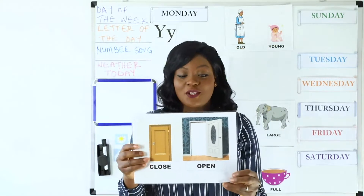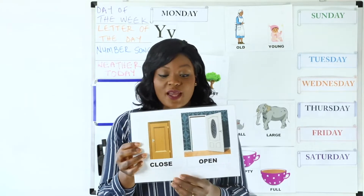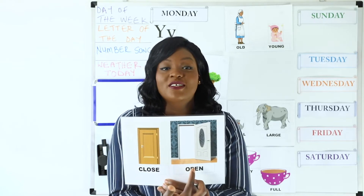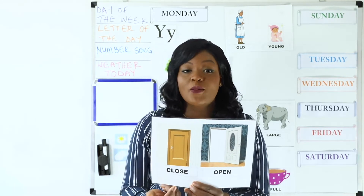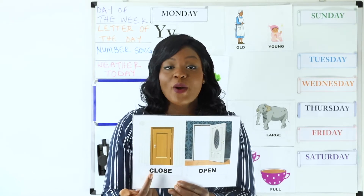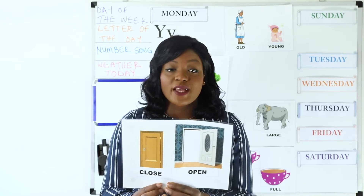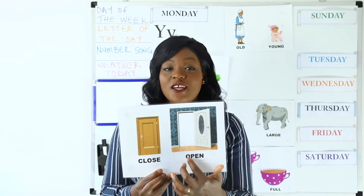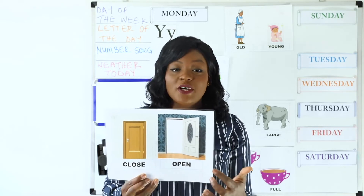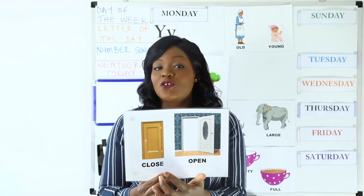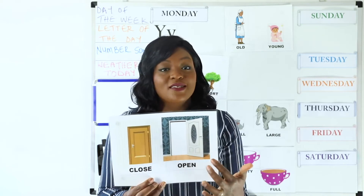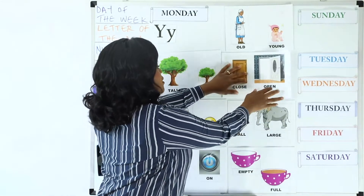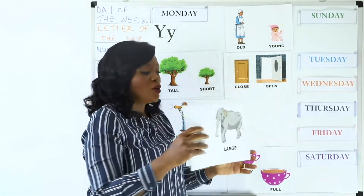Over here I have a picture of doors. We have a door that is closed and a door that is open. So what is the opposite of closed? When your door is not closed, that means it is open. The opposite of close is open. The opposite of open is closed. Well done.